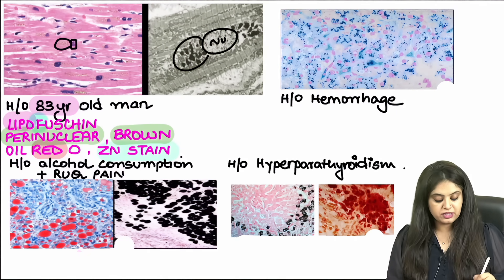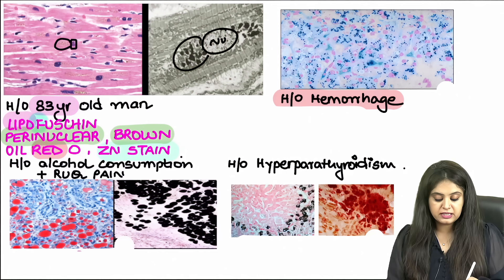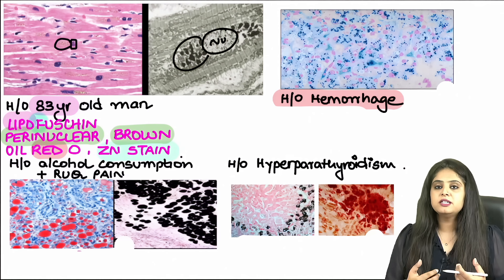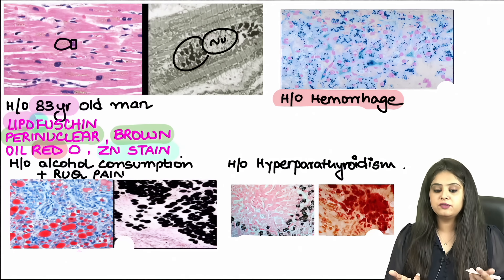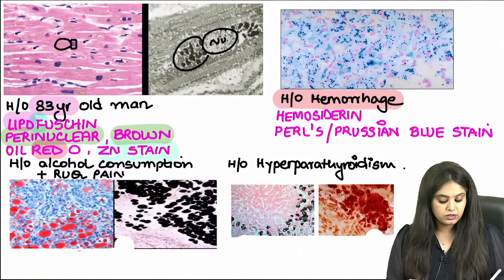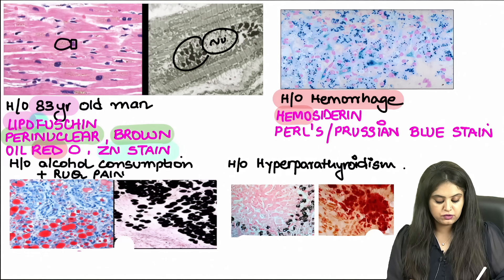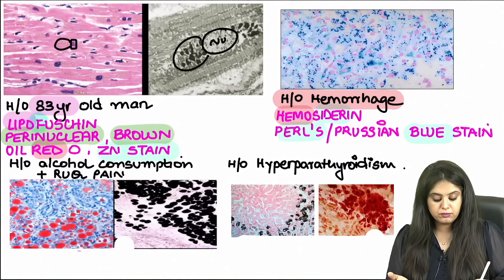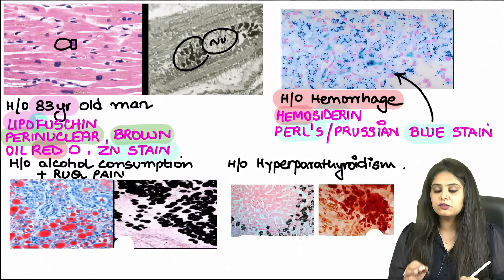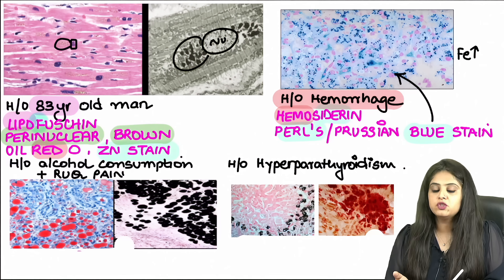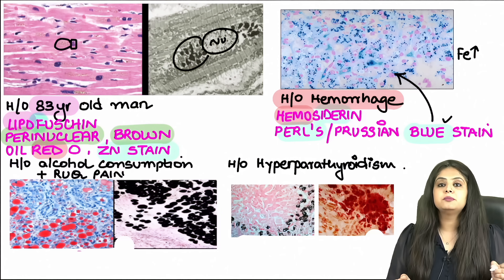Moving to the next history: there is hemorrhage — blood loss, road traffic accident, or internal bleeding. Whenever blood is present, iron will come, and the pigment from iron is hemosiderin. 'Hemo' indicates hemorrhage and 'sidero' indicates iron. The special stain for iron is Pearls or Prussian blue stain, and the blue colour is obvious in the image. This also means that any iron overload condition like hemochromatosis uses the same Pearls or Prussian blue stain.